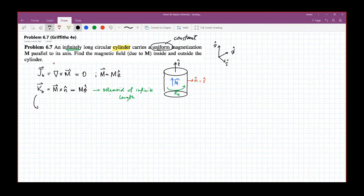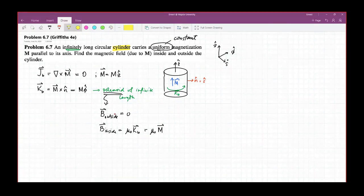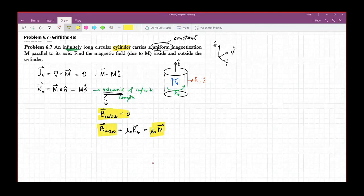So therefore, this tells us that the magnetic field outside is zero, just like your solenoid. And the magnetic field inside will be equal to mu k, which is equal to mu naught times n. So this is your magnetic field outside and magnetic field inside.